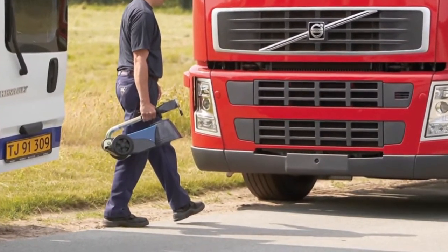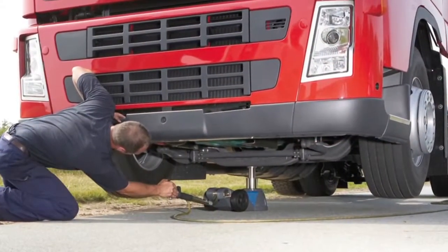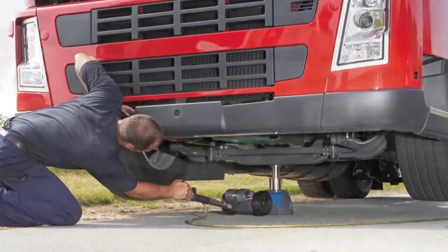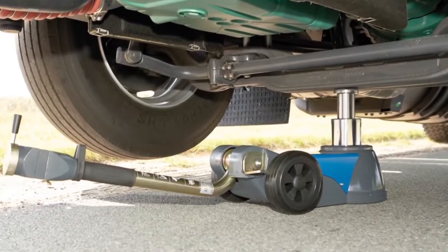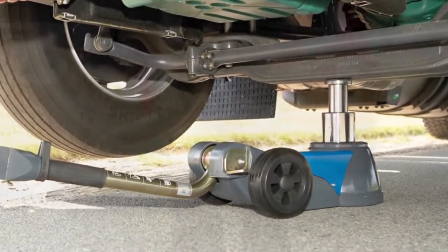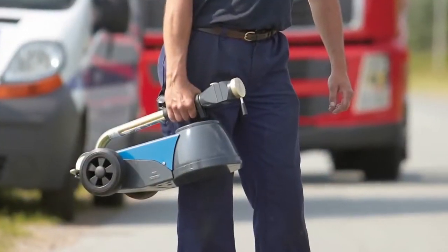Thanks to the low minimum height of 161mm, you can easily place the jack under vehicles such as lorries and buses. Despite its low weight, the jack offers a lifting capacity of 25 tonnes.